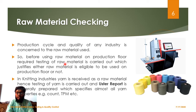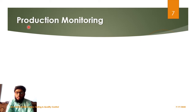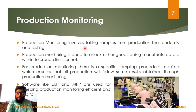Before running any raw material on the production floor, its testing is performed in order to justify the quality of the raw material. For example, in knitting industries, yarn is used as a raw material, so before running that yarn on knitting machines, its uster report is prepared, which justifies the specific qualities of yarn such as its count, twist per meter, and several other qualities.